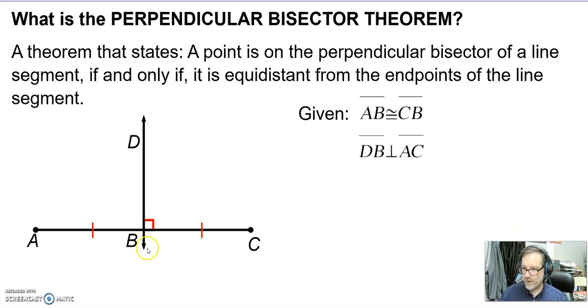Right here I can see that line DB is a perpendicular bisector of AC. Segment AC got cut in half, and when it got cut in half we made a right angle. Here's the perpendicular, that's the bisect. So we've got a line that cut a segment in half and made a right angle. So the theorem states,